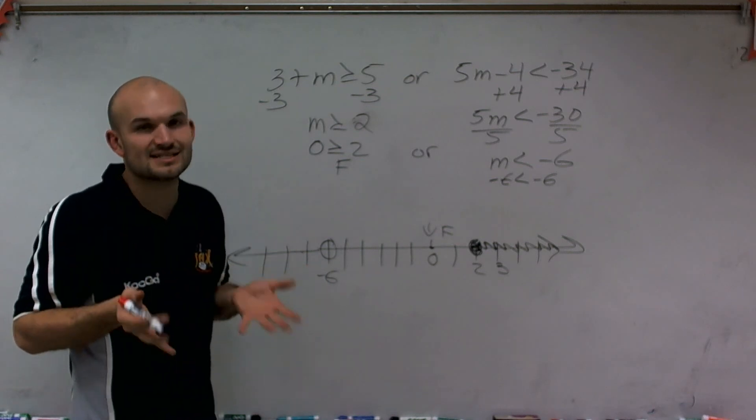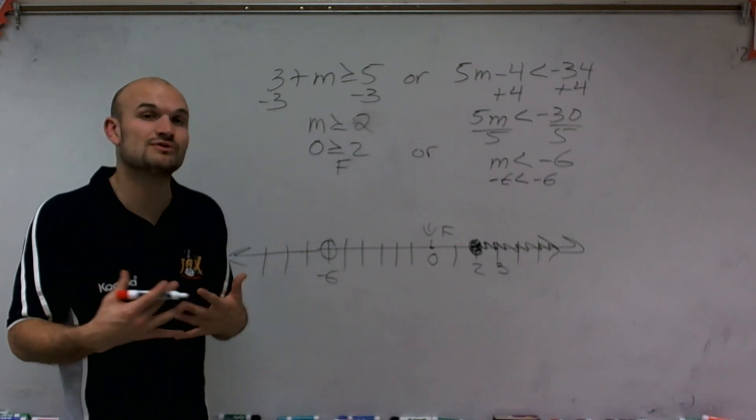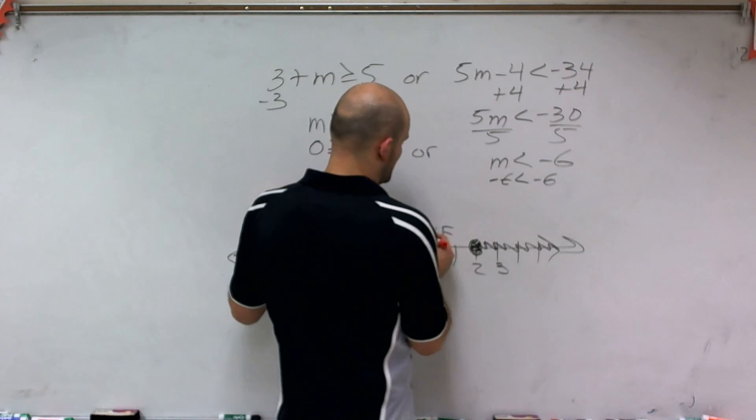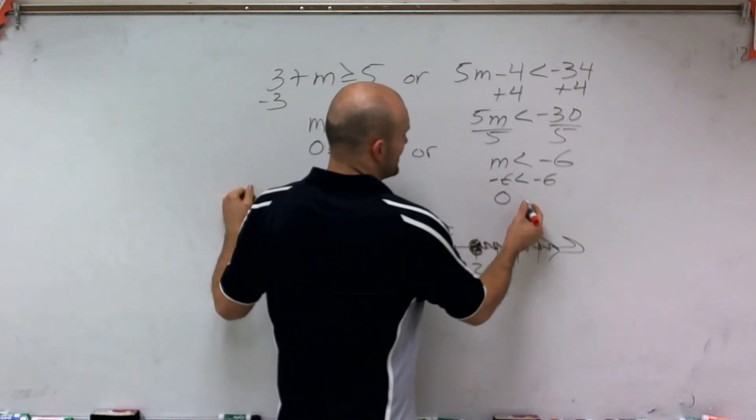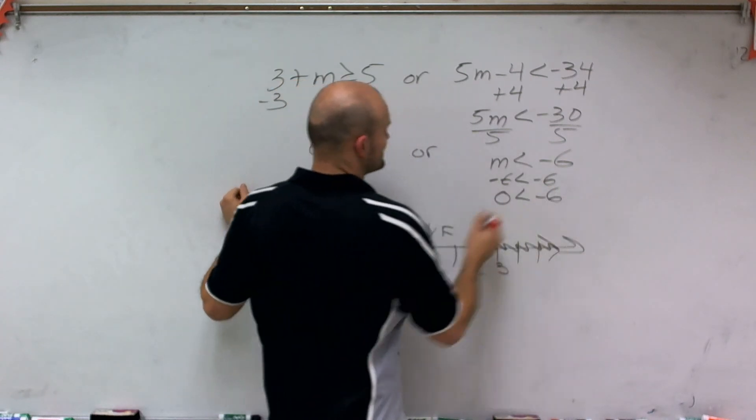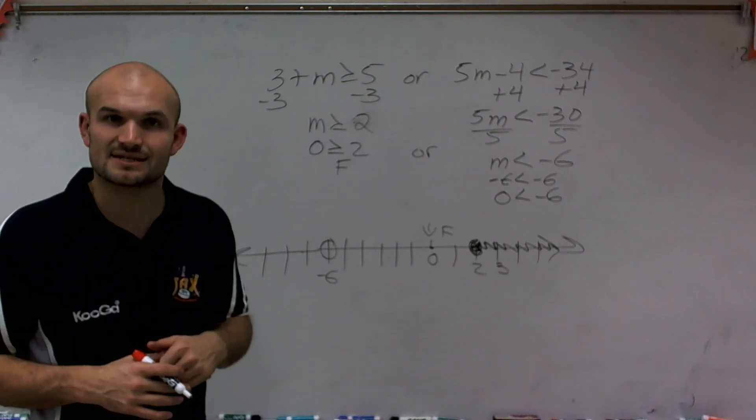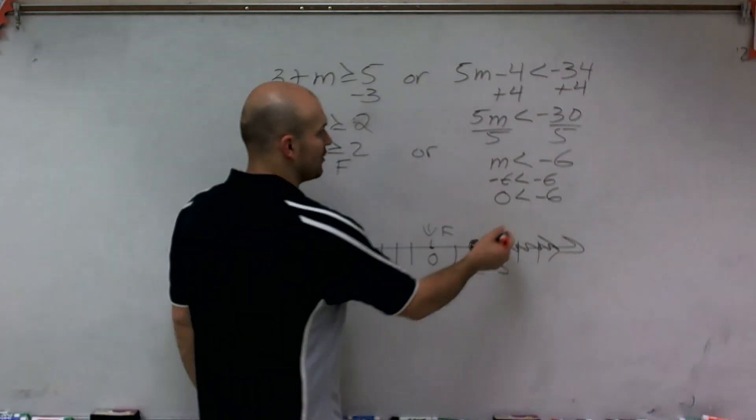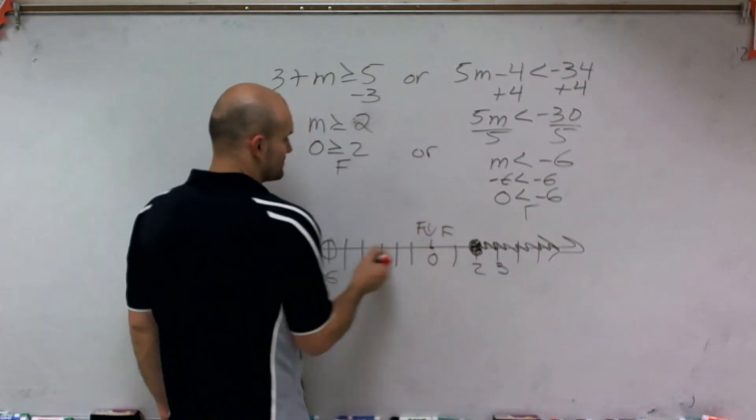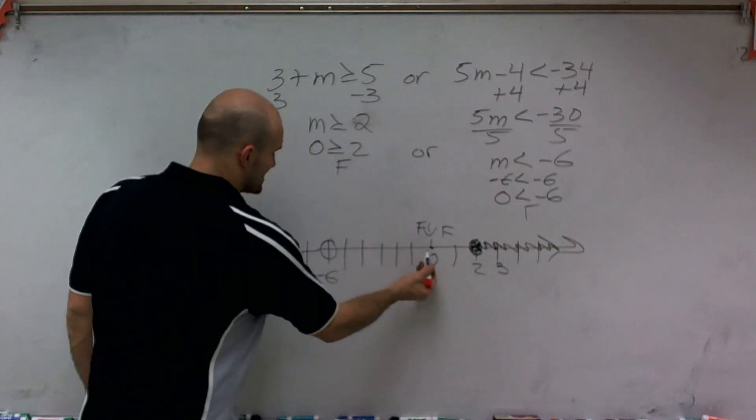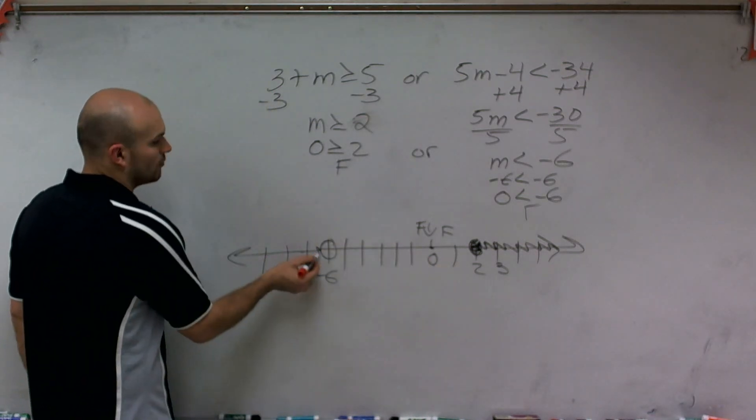So let's pick 0 again. So if I test my graph for 0, I say 0 is less than negative 6. And that's incorrect. That's false as well. So since it's false for this equation, instead of graphing towards my test point, I'm going to graph away.